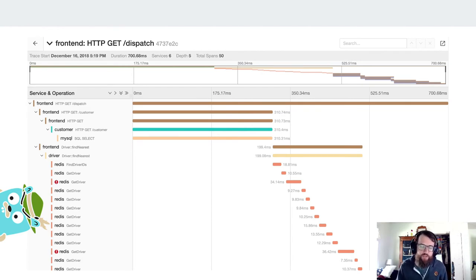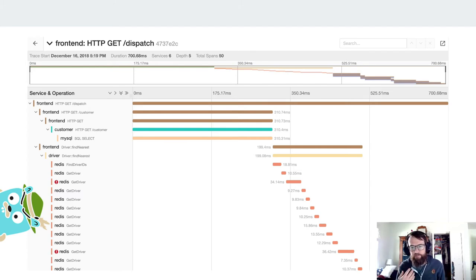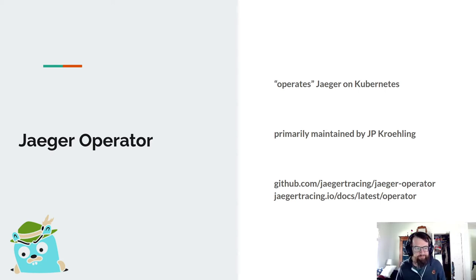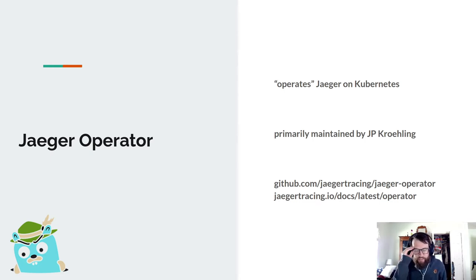Jaeger shows us all the different pieces and where time was spent as we pass through the many services used to answer requests. The operator itself builds the cluster we use — giving us the Jaeger UI to record, store, and visualize data. It operates Jaeger on Kubernetes, and it's primarily maintained by JP Crawling, a Red Hat engineer and long-term Jaeger maintainer. The GitHub repo and the docs are the two most important links if you get involved with the operator.